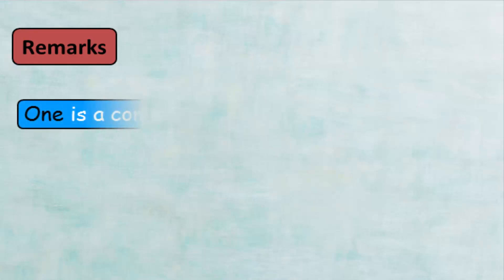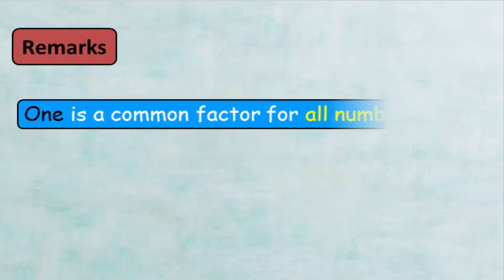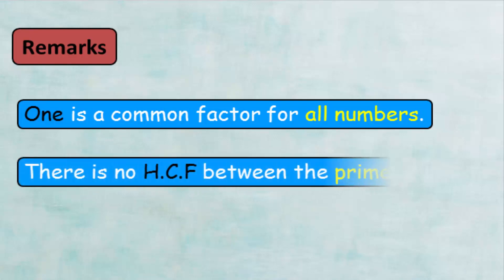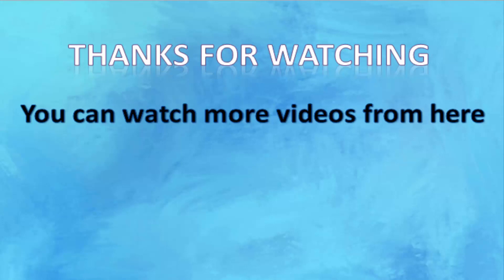At the end, do not forget that the number 1 is a common factor for all numbers. Also, there is no HCF between prime numbers. I hope that the explanation was perfect. Don't forget to practice what you have learned by doing the exercises for this section. Thanks for watching and listening. See you next time.